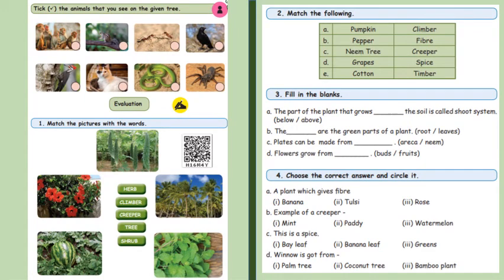Take the animals that you see on the given tree. Here we have animals who live on the tree like monkeys, squirrels, crow, woodpecker.